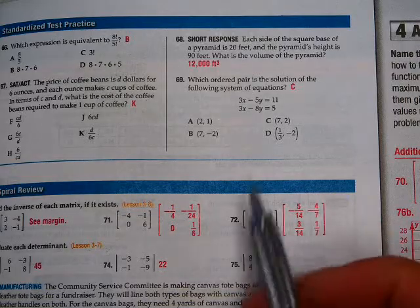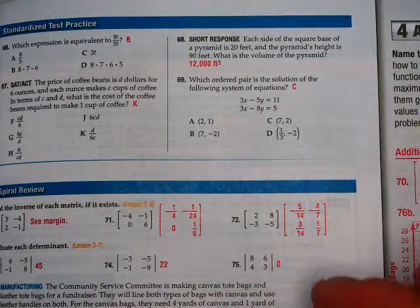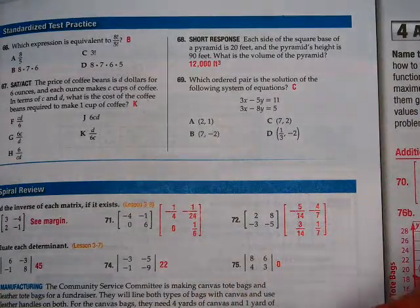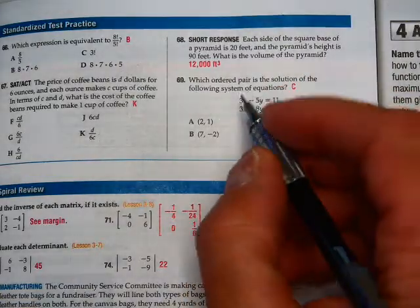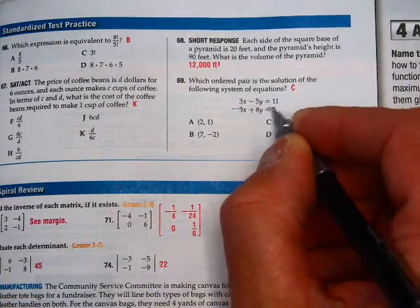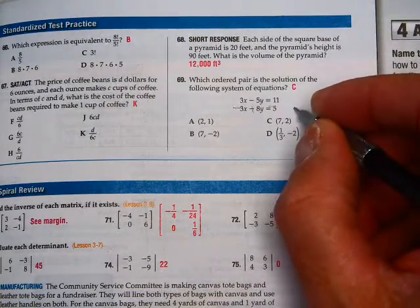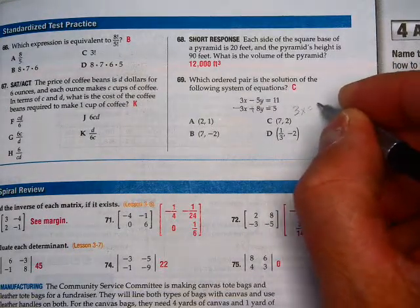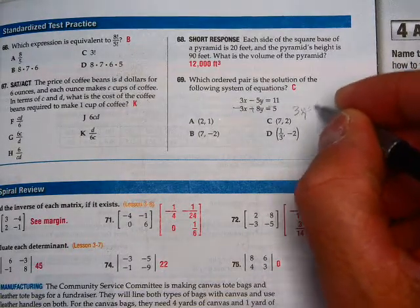Anything else on this first page on the multiple choices? You guys do okay with 66? Good. Hopefully that goes pretty quickly, because 8 all the way down to 1, 5 all the way down to 1. What do you have left over? 8, 7, 6. You multiply 8, 7, 6.